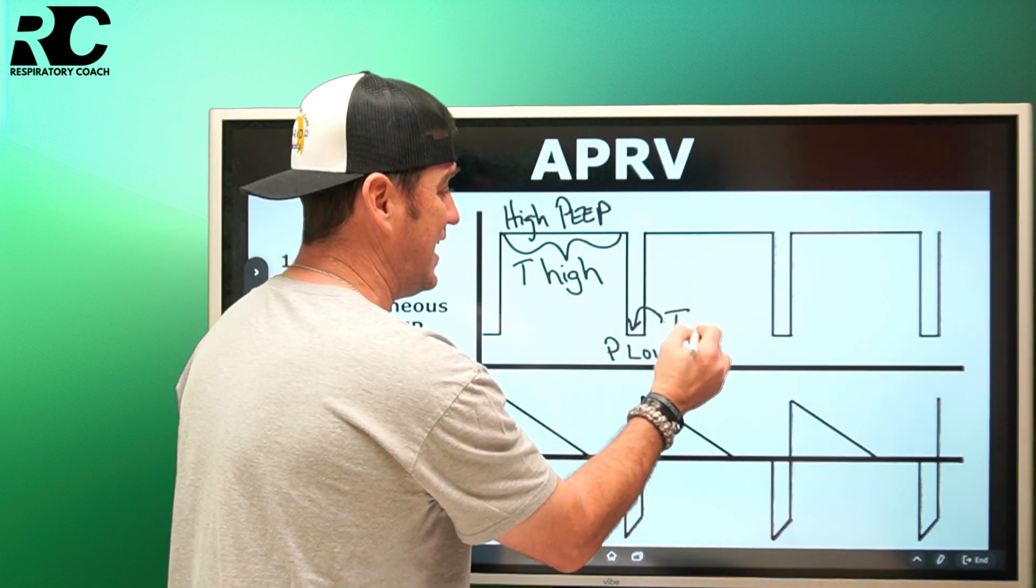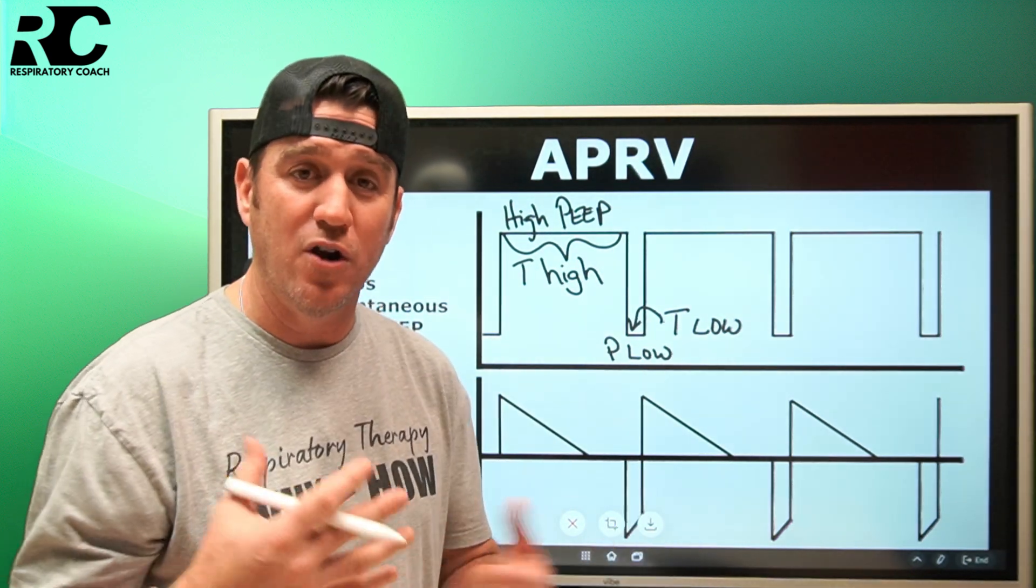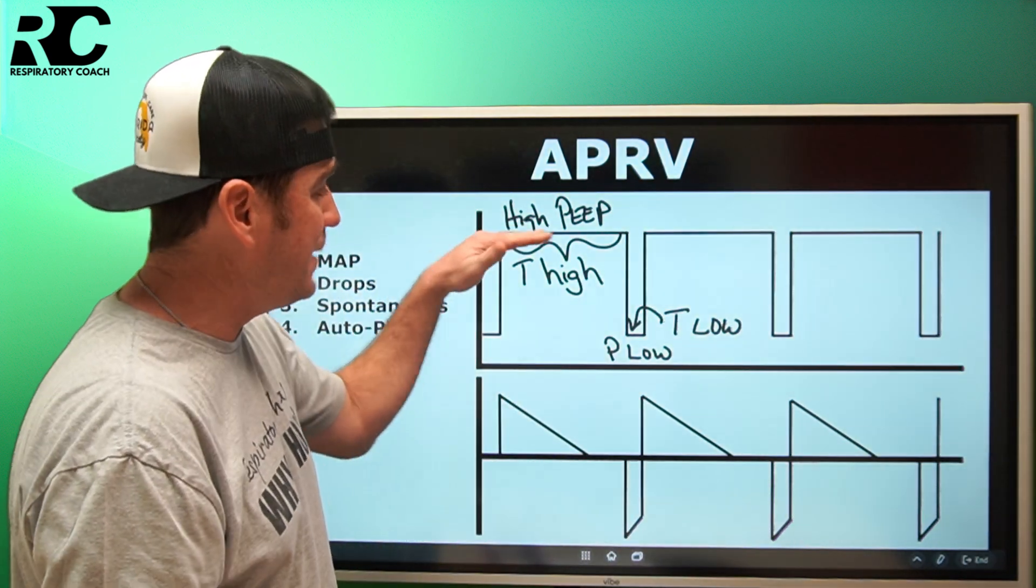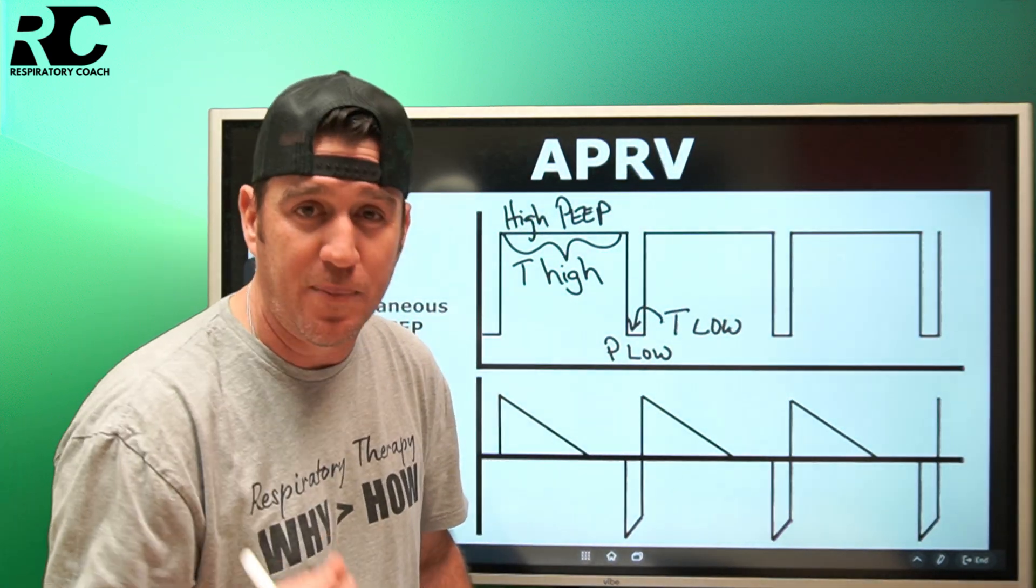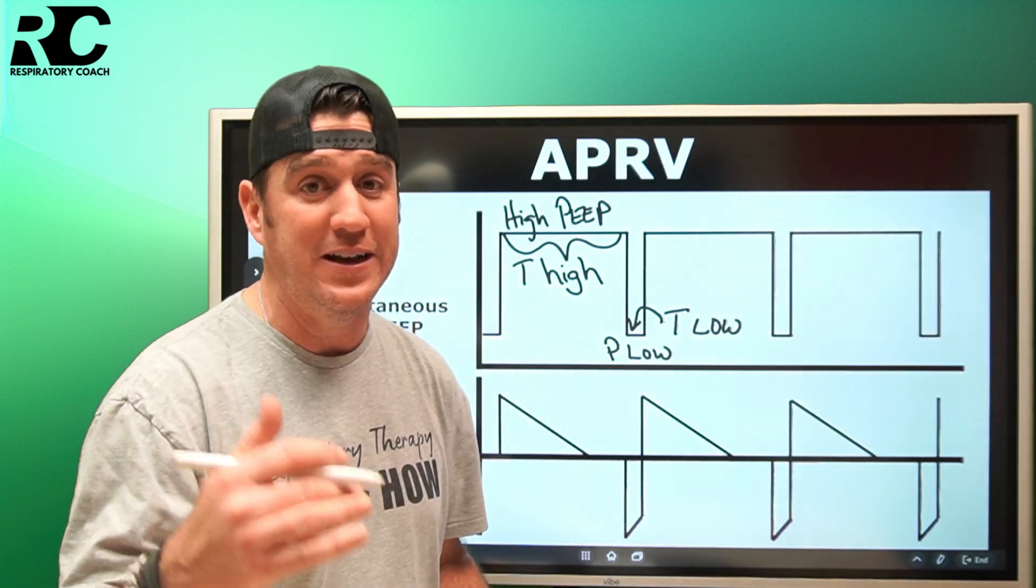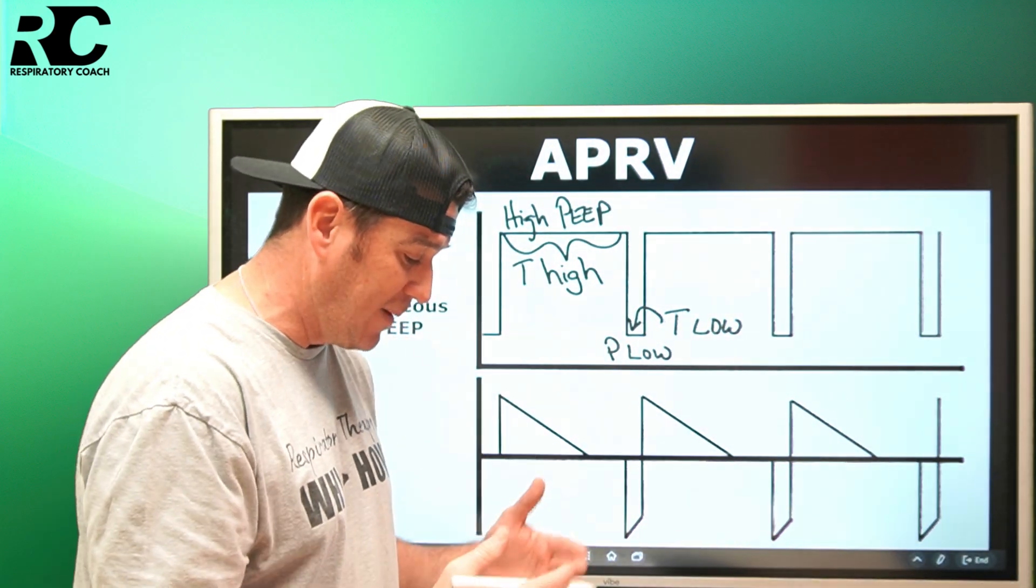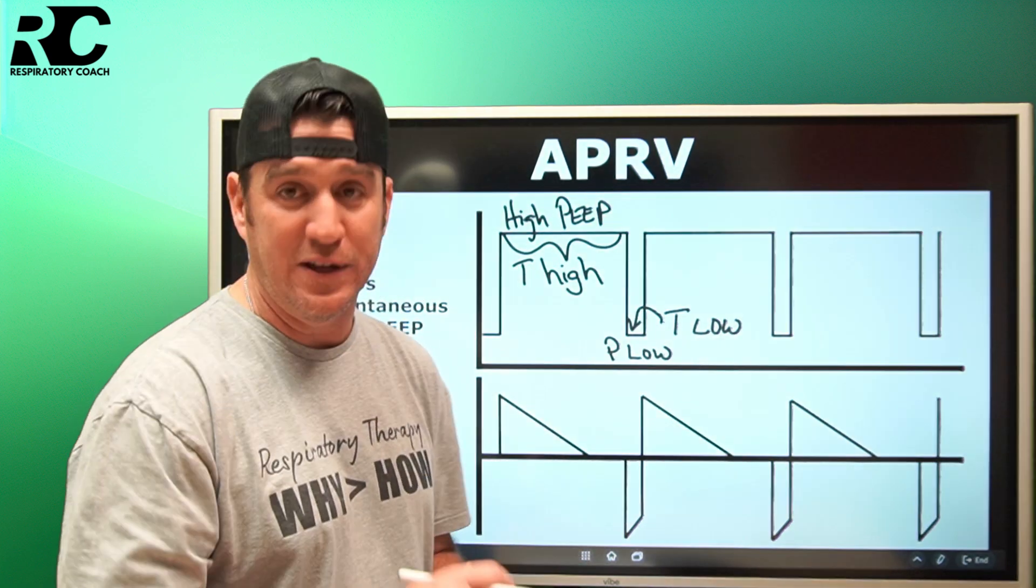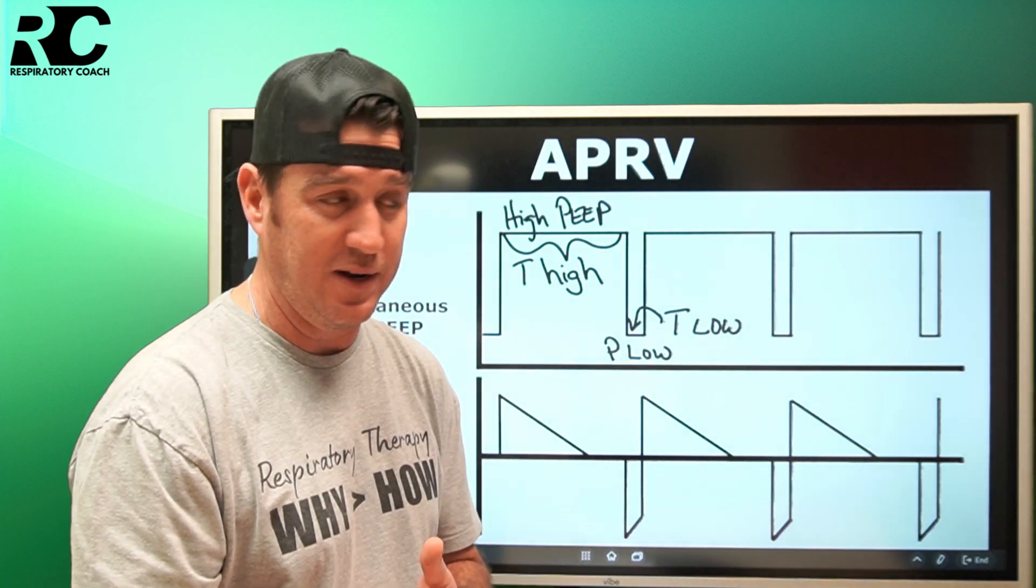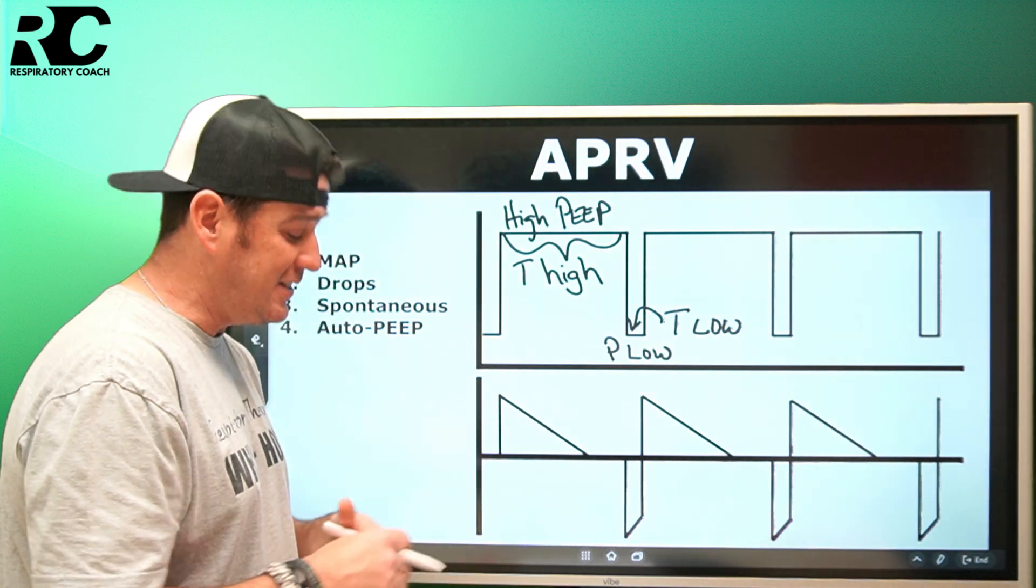When we talk about where normal settings are, Egan's addresses it. It says usually for your high PEEP you're starting somewhere in the ballpark of 20 to 30 centimeters of water pressure, but may be higher and varied depending on your patient's pathophysiology specific to them. So remember there's no just set it at 25 every single time. You got to know your patient - what is my current plateau, what is my current mean airway pressure - and we have to use and take all of that into consideration.